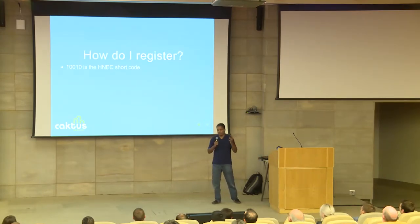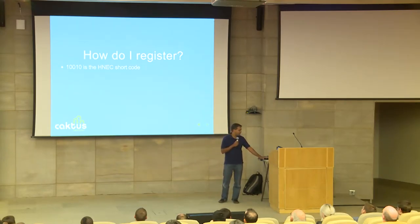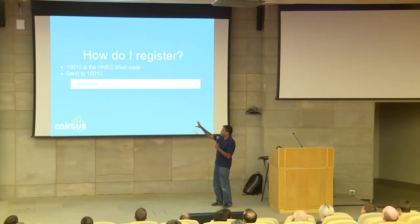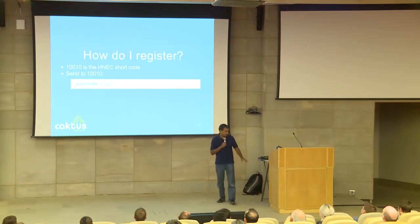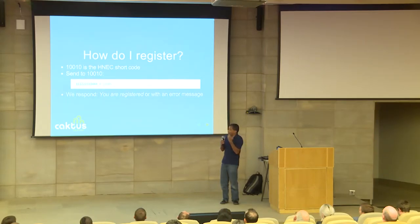What is this application we built? Basically we have a short code — HNEC stands for the High National Elections Commission. Every citizen has a 12-digit national ID which is unique, and every polling center has a five-digit code. All you do is send your ID, some kind of delimiter like a hash mark, and then the polling center code you want to vote at, and we respond that either you're registered or there's an error. That's all our application does — a very simple process.